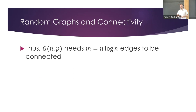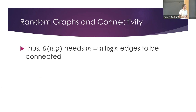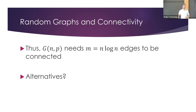This means Erdős-Rényi graphs need roughly n log n edges to become connected. If we pick p that is too small for that to happen, the graphs would not be connected. This is somewhat unfortunate because we know that you don't need more than n−1 edges to connect n vertices. So maybe we should go back and think about alternative models.